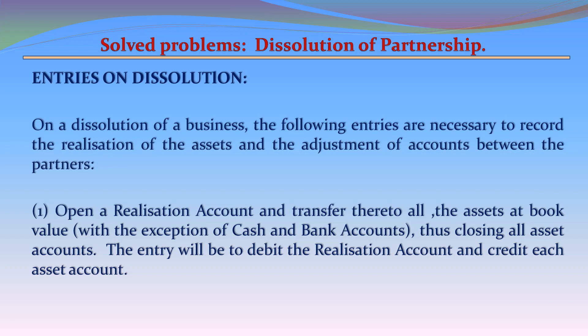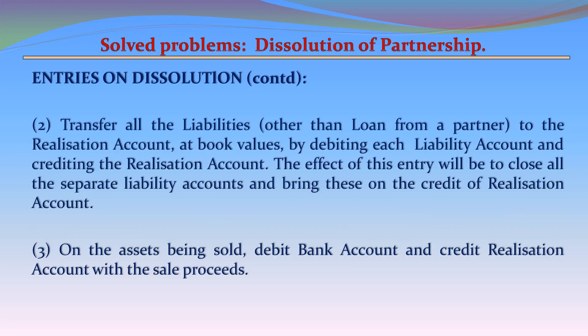Entries on Dissolution. On dissolution of business, the following entries are necessary to record the realization of assets and the adjustment of accounts between the partners. Entry 1: Open a realization account and transfer thereto all the assets at book value, with the exception of cash and bank accounts, thus closing all asset accounts. The entry is to debit Realization Account and credit each asset account.